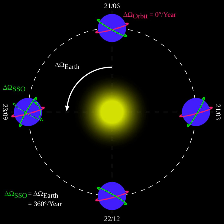This orbit is also useful for imaging, spy, and weather satellites, because every time that the satellite is overhead, the surface illumination angle on the planet underneath it will be nearly the same.